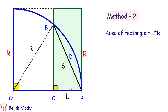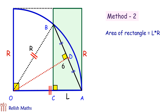To get the value of L times R, we drop a perpendicular from O onto AB. Triangle OAB is an isosceles triangle because OA and OB are both equal to R. In an isosceles triangle, the altitude is also a median, and thus BD and DA are equal to each other — so BD = 3 cm and DA = 3 cm.